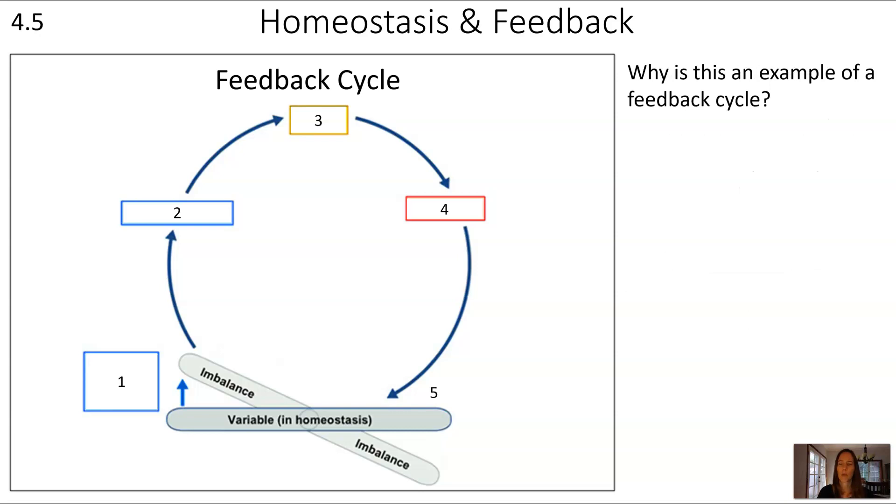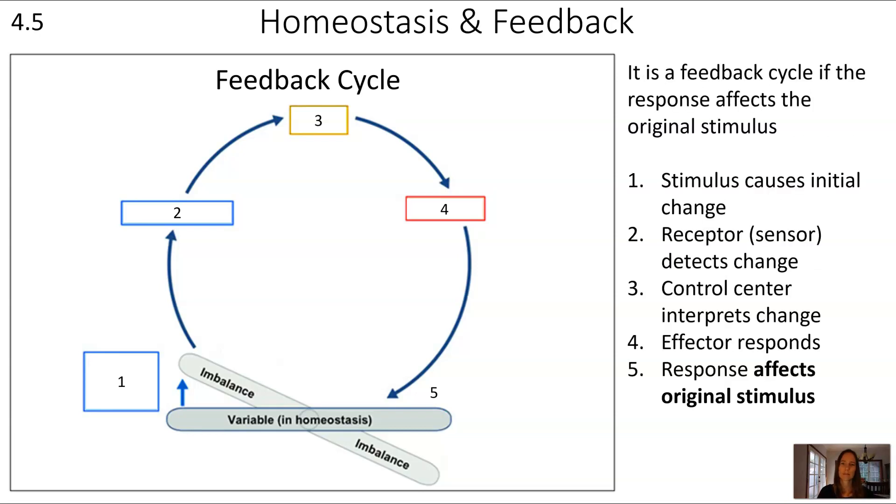So why is this an example of a feedback cycle? Think about the word feedback. The reason this is a feedback cycle, shown in this diagram, is that the response affects the original stimulus. You can see in number 5 that this response is acting on that same variable that was interacted on by number 1, the original stimulus.